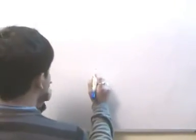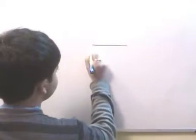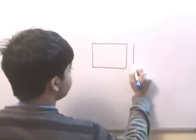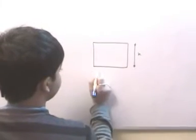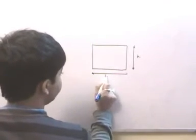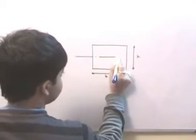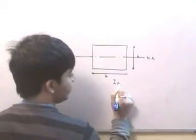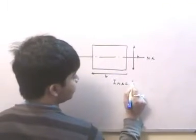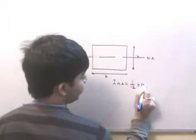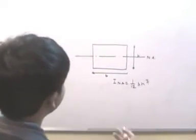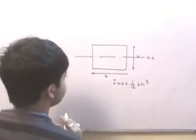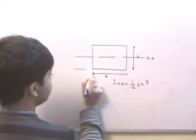From the previous lecture, I have this rectangular section where this is my H and this is B. This is my neutral axis, and about the neutral axis the moment of inertia is equal to 1/12 BH³. Now if we have to find the moment of inertia with respect to some axis which is parallel to this neutral axis, let that axis be XX.